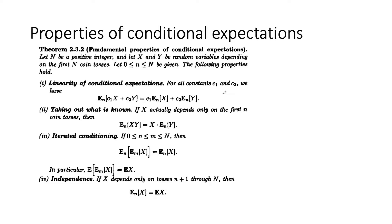Then there's the idea of taking out what is known. If X depends only on the first n coin tosses, then X is really not random anymore, because it doesn't depend on coin toss n+1 or n+2 going into the future. So this is just like a constant. Since it's a constant, we can take it out. That is because X was maybe random before, but once we get to time n, it's not random anymore — it's just a constant.